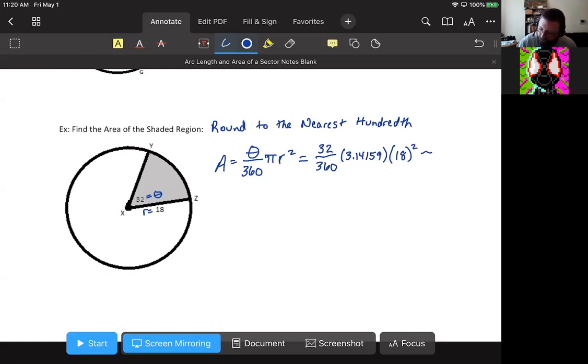We're going to feed that to our calculator. So 32 over 360 times π, 3.14159, times 18 squared is 90.477. So since this is bigger than 5, we're going to round this up, which would mean the area is going to be 90.48 square units.